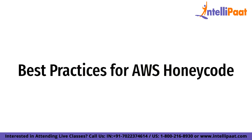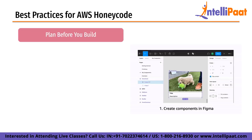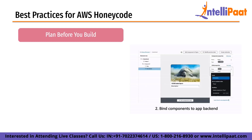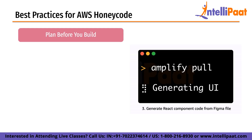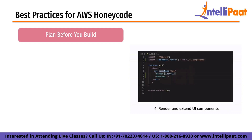Now let's look at some best practices for AWS Honeycode. Honeycode is a powerful tool for building custom business applications and it offers a range of features and capabilities to make app development easy and efficient. To get the most out of Honeycode, it is important to follow best practices that ensure the app is well designed, reliable and easy to use. First is plan before you build. Planning is critical for any app development project. Before you start building the app, take the time to define the user flows, data models and UI design. This will help you create a well-designed app that meets the user's needs.